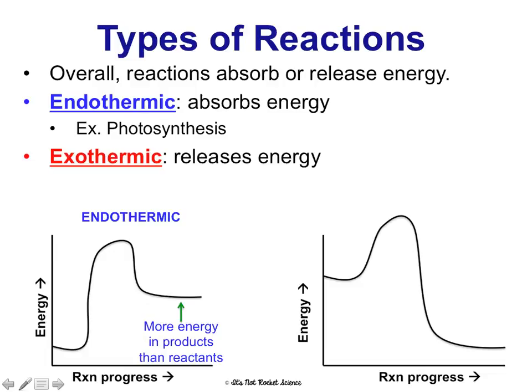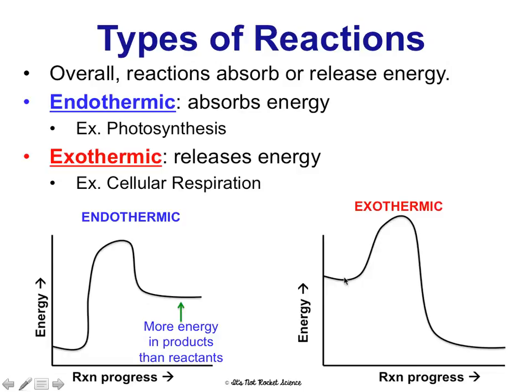Exothermic means a reaction releases energy. This is like cellular respiration, where we break down food to release energy for our body to use. Here, we start with reactants and end with products — notice we have less energy in the products because energy was released in this type of reaction.